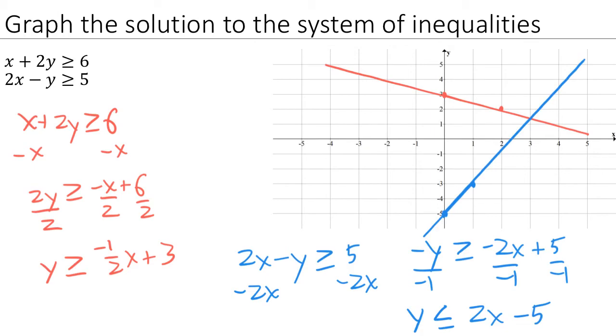There we go. Now notice that the two lines have divided the plane into four regions. 1, 2, 3, 4. Let's label them real quick. We'll just call them A, B, C, and D.